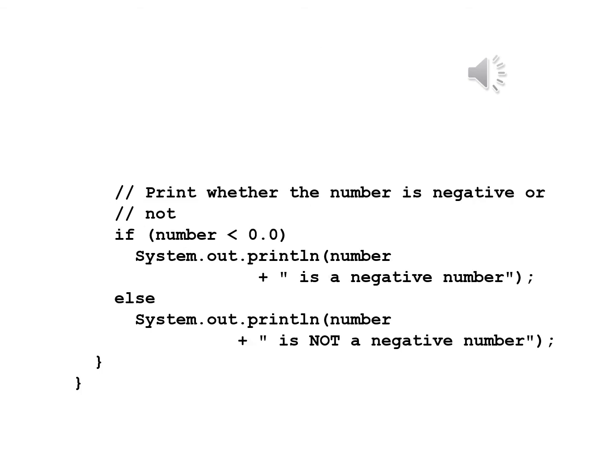The next comment says: print whether the number is negative or not. We have if, and in parentheses, number is less than 0.0 — making it clear we're comparing one double with another. Then System.out.println number concatenated with 'is a negative number.' Else, System.out.println number concatenated with 'is not a negative number.' Lastly, a close brace to end the main method and a close brace to end the program.